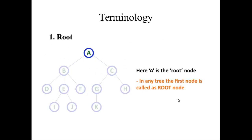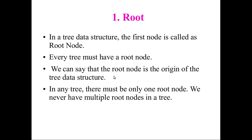Now we are going to see all the terminologies used in the tree. The first one is the root node. A is the root node here. In tree data structure, the first node is called the root node. Every tree must have one root node and it is the origin of the tree data structure. There must be only one root node — it never has multiple root nodes.